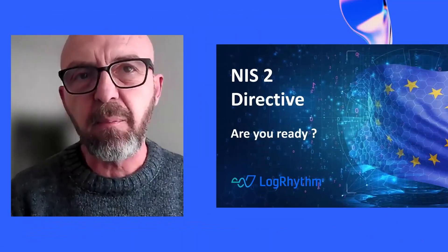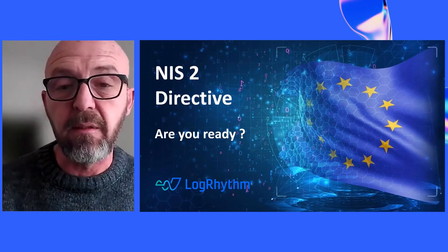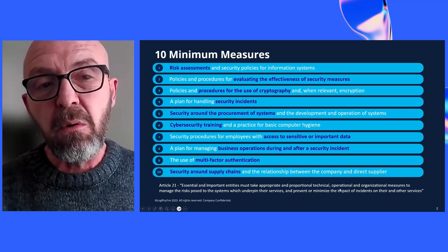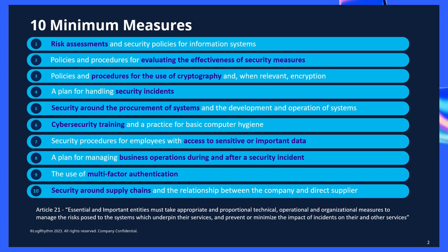Good morning everybody. Today we are talking about how LogRhythm is going to help you drive the correct approach and the right measures in terms of the NIS2 directive. As you know, we have 10 different minimum measures that we need to implement — most of them are oriented to the processes, procedures, and policies you need to put in place.